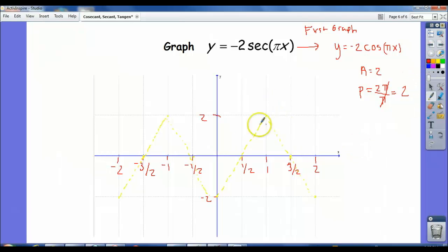And wherever cosine is zero, there are going to be vertical asymptotes for secant. And they'll be one at the same place. But secant will be looking like this.